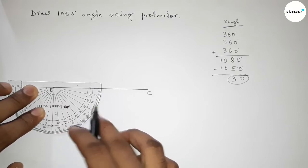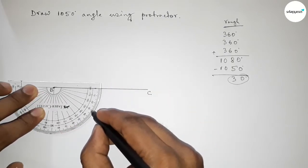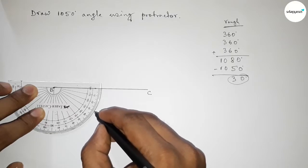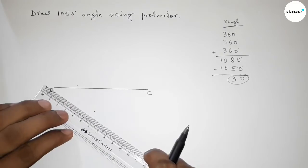Counting 30 degree angle from this to this, so this is 30 degree angle. Okay, so now joining this line, so joining this and taking here point A.